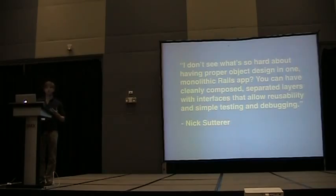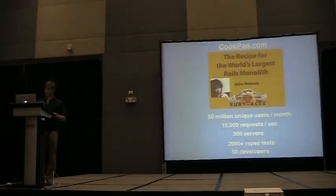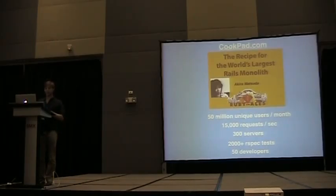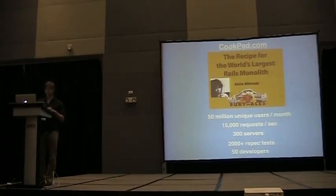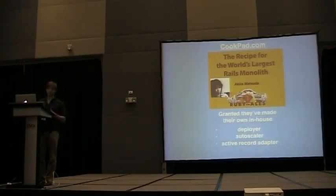I wanted to look at some success stories of monolithic apps. Akira Matsuda has a really great presentation about cookpad.com where he's got a team of 50 developers, 50 million unique visitors a month, 15,000 requests a second, and 2,000 tests — and they're able to make this work. Granted, they have their own in-house deployer, autoscaler, and Active Record adapter, so maybe there are some really smart engineers making it work.